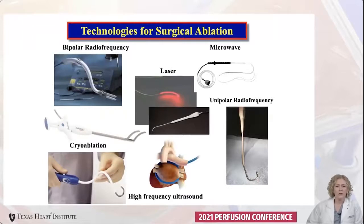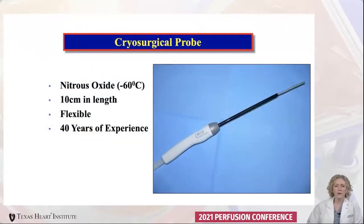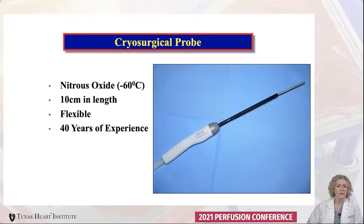There are several energy sources that have been used for surgical ablation over the past 20 years, including bipolar radiofrequency clamps and cryosurgical energy sources. The majority of earlier sources like laser, microwave, and unipolar radiofrequency are no longer used. The cryosurgical probe has evolved from its original frigitronics cryoprobe used as early as 1973, utilizing nitrous oxide at negative 60 degrees centigrade. The probe is made of aluminum, making it highly flexible to achieve good contact with the endocardium.